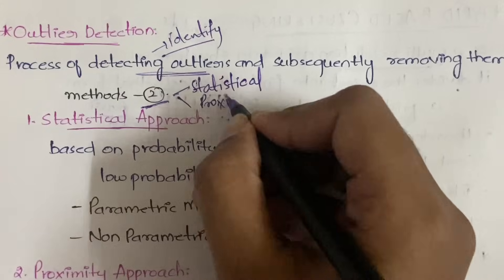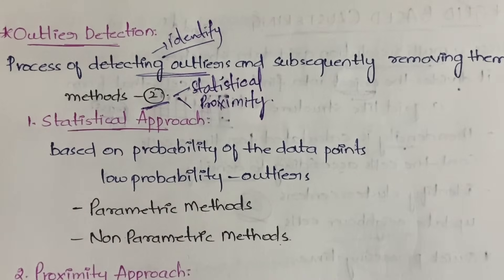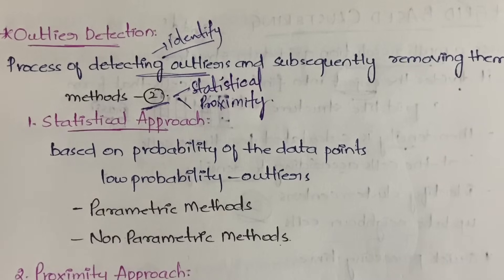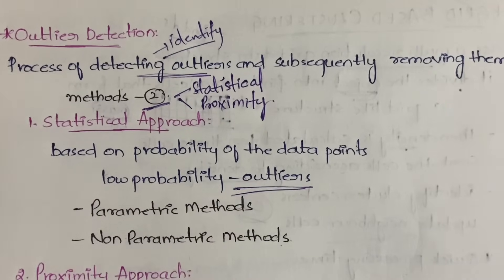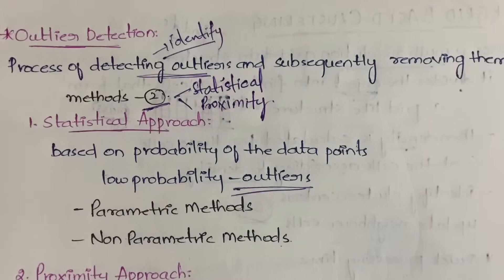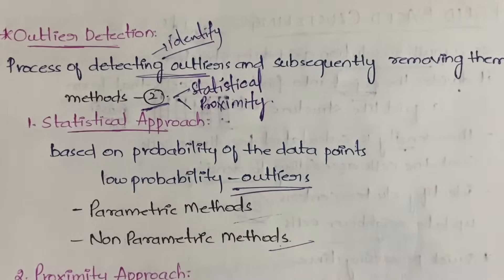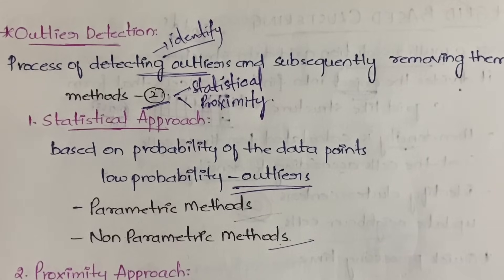In order to do outlier detection, we have two methods: statistical and proximity. The statistical approach is based on the probability of the data points. Suppose you have ten data points — for all those ten data points you will be calculating the probability. Whichever data point has the lowest probability will be considered as the outlier. So the low-probability ones will be categorized as outliers.